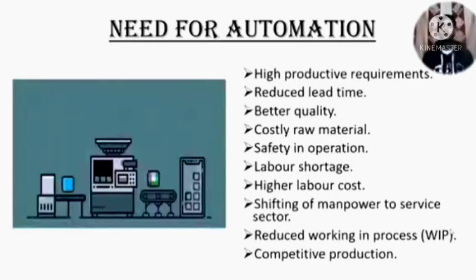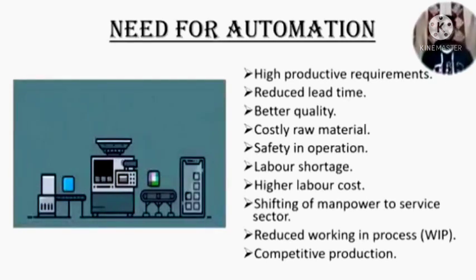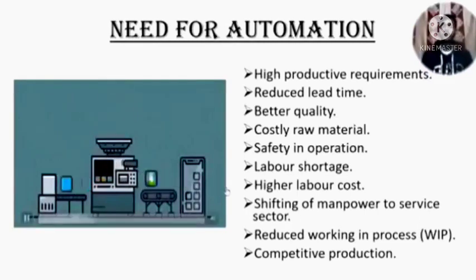We come to the topic: need for automation. Why we needed automation? To know this, we need to focus on ongoing trends in global industry. We have high productivity requirements, need to reduce lead time, better quality of production was needed, raw materials were getting costly, we need safety in operation, labor shortage was also a concern, higher labor cost was also an important factor. Shifting of manpower to the service sector, reduced work-in-process, and competitive production all led to the need for automation.